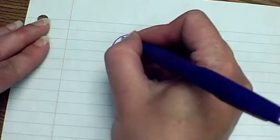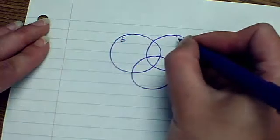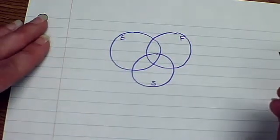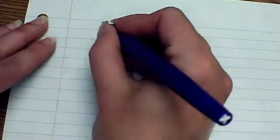So we've got three circles. And it said that one of them is English, one of them is French, and one of them is Spanish.